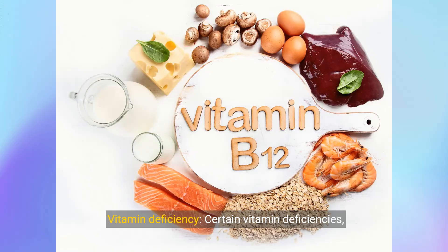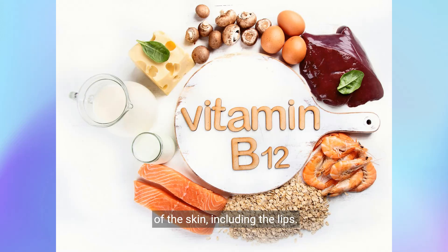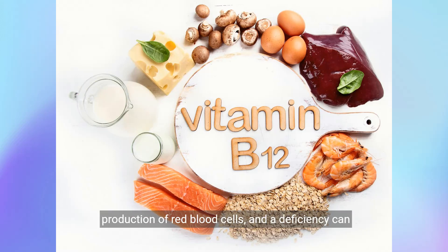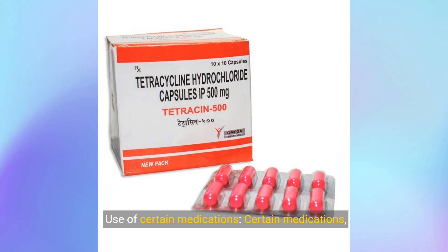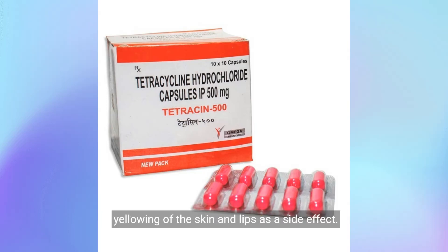Vitamin deficiency. Certain vitamin deficiencies, such as vitamin B12 deficiency, can cause yellowing of the skin, including the lips. This is because vitamin B12 is essential for the production of red blood cells, and a deficiency can lead to pernicious anemia, which can cause yellowing of the skin. Certain medications, such as tetracycline antibiotics, can also cause yellowing of the skin and lips as a side effect.